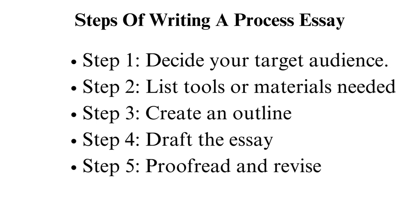Step 3: Create an outline. The first activity in creating a process essay outline is doing immense research. As you research, list down the resources you will use and note what you will obtain from them. Go through the notes and craft an outline. The outline should highlight what you will discuss in each section and paragraph in your essay. It should also mention the resource you will use for each part.